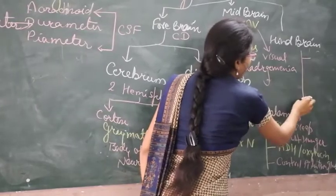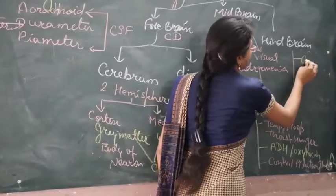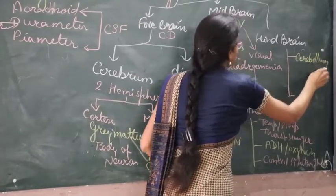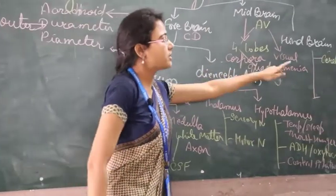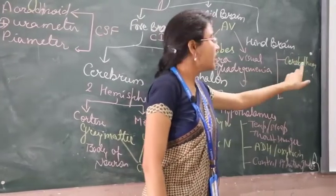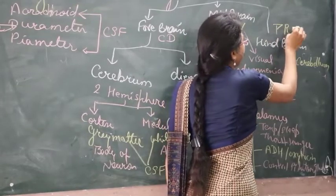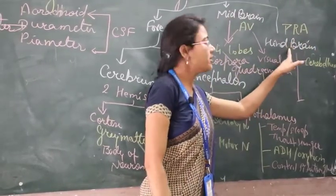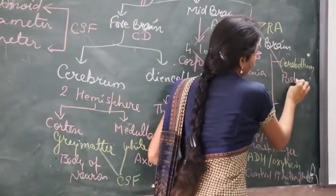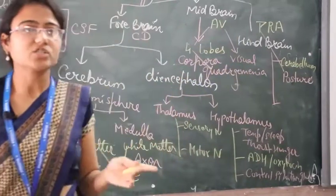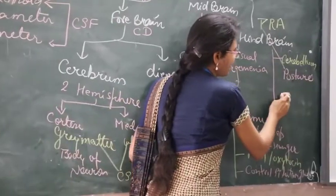Now the hindbrain. The hindbrain comprises two main parts: the first part is the cerebellum, which is known as the little cerebrum. Cerebrum is the largest part of the brain and the cerebellum is the second largest part. The cerebellum's functions can be remembered as PRA: P means body posture, which is controlled by the cerebellum. While walking, talking, or performing actions, our body equilibrium is controlled by the cerebellum.